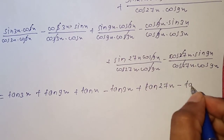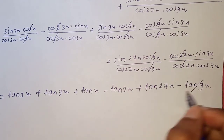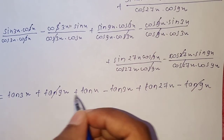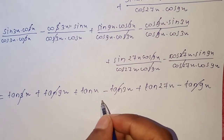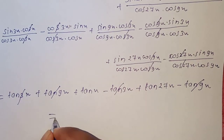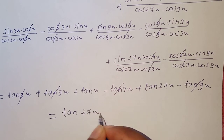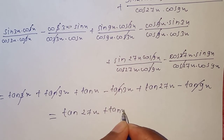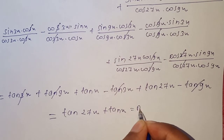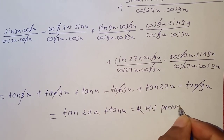After cancellation, the remaining terms give us: tan(27x) - tan(9x) + tan(9x) - tan(3x) + tan(3x) - tan(x), which equals tan(27x) - tan(x). Therefore LHS equals RHS, proved.